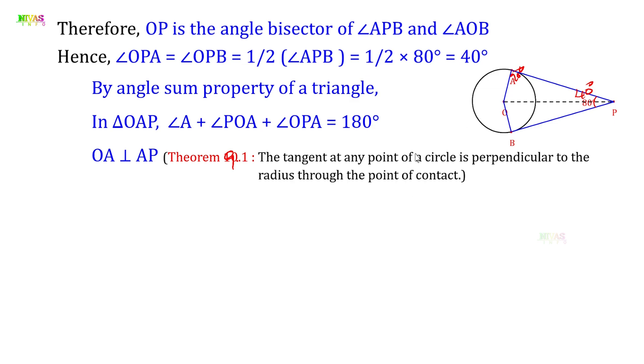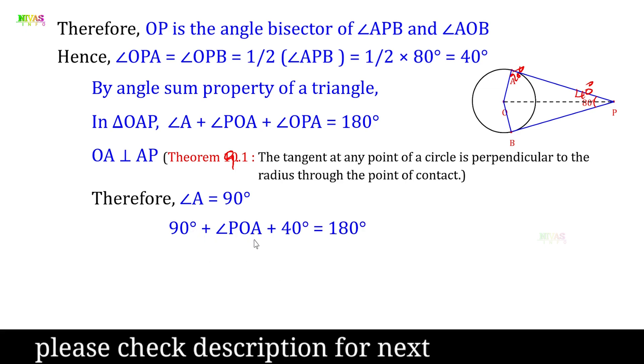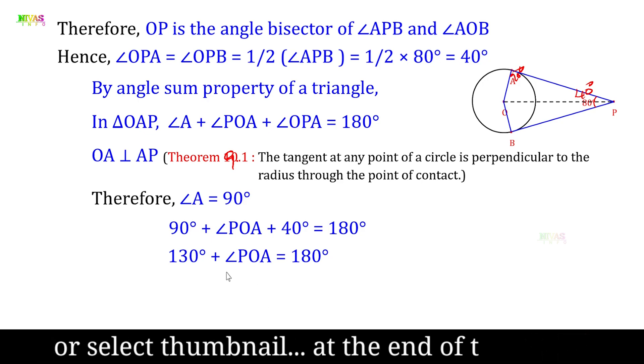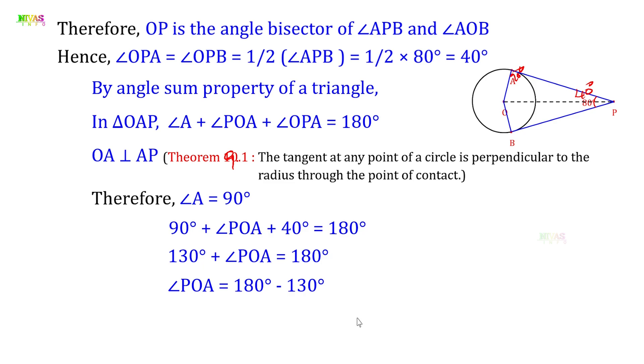Angle A is 90 degrees and angle OPA is 40 degrees. Substituting: 90 plus POA plus 40 equals 180 degrees. 90 plus 40 is 130. So 130 plus angle POA equals 180 degrees. Transposing 130 to the right side: angle POA equals 180 minus 130, which equals 50 degrees. Therefore, option A is the right answer.